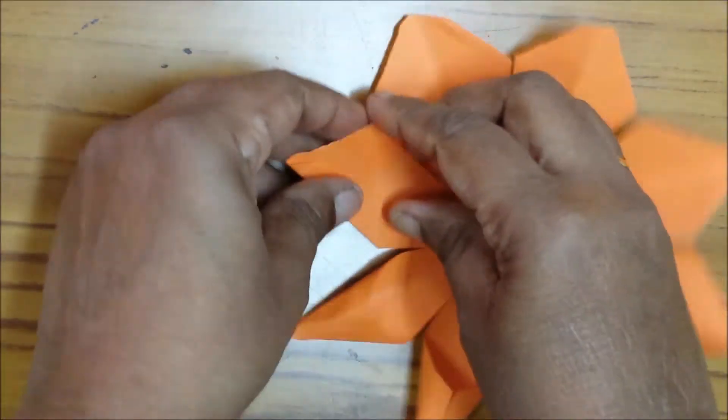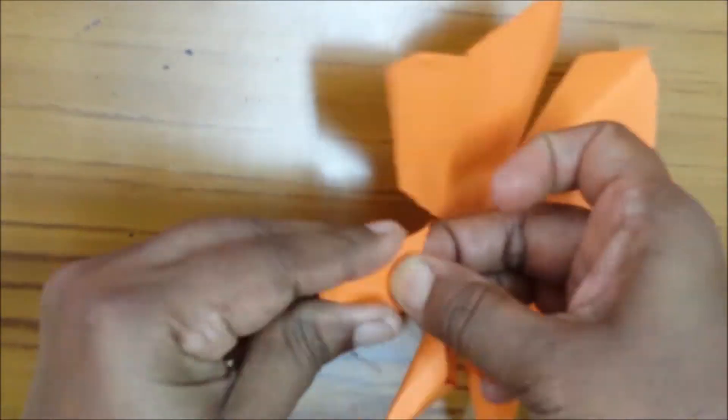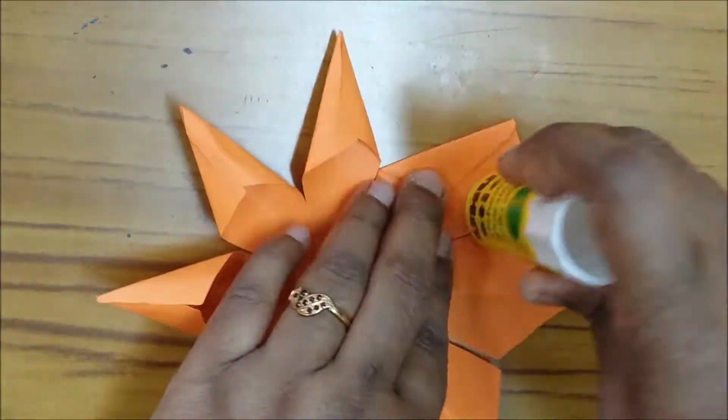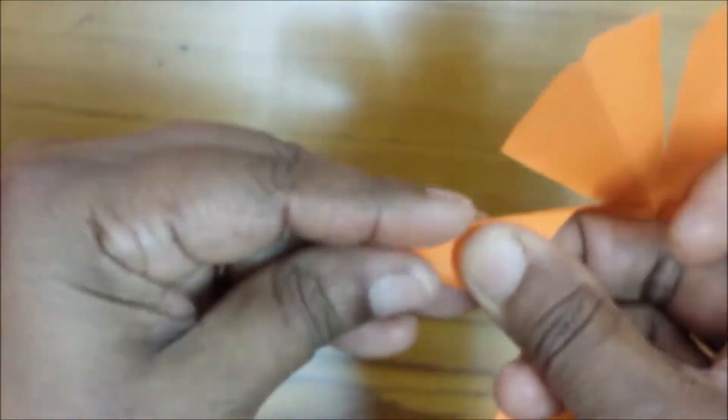Every petal should fold it like triangle cone, little embossed like cone. When you are joining the flower, it is giving embossed